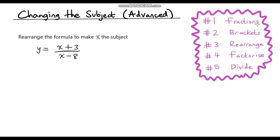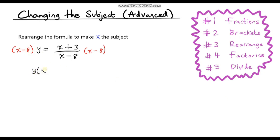The first thing I like to do is to deal with any fractions. At the moment we've got x minus 8 in our denominator — I want to get rid of that. To get rid of it, I need to multiply this fraction by x minus 8. Obviously I can't just do that to one side of my equation, I need to do that to the other side as well. So I'm going to multiply the left hand side by x minus 8. On the left hand side we've got y times x minus 8.